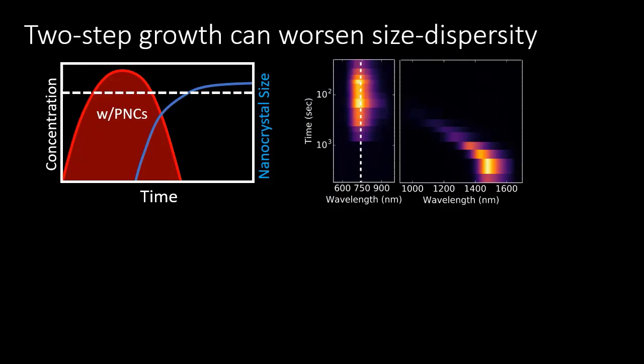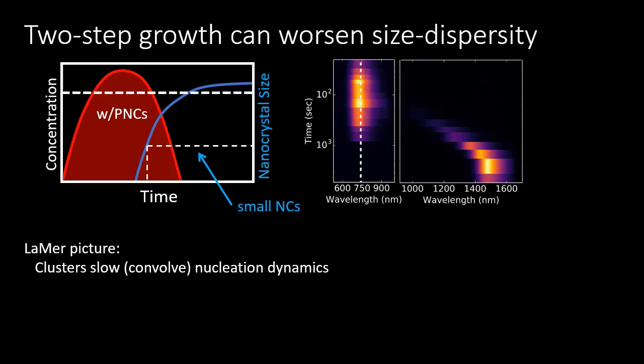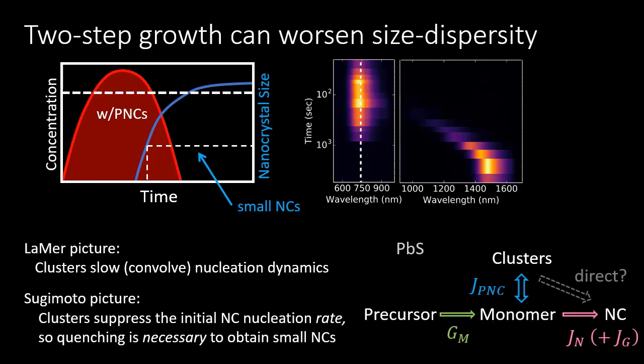Why did this matter for our energy-flattening goal? Two-step growth worsens size dispersity. You can think of it this way: you're adding an extra kinetic step that convolves your nucleation kinetics and makes more of a mess. If you want a small nanocrystal, you have to quench the growth while new nanocrystals are still nucleating, so you can't take advantage of having a sharp starting gun that gets all your growth going simultaneously. Moving toward the richer Sugimoto-type picture: the formation of metastable clusters competes for resources with the formation of nanocrystals, suppressing the initial rate of stable, durable nanocrystals, making it effectively necessary to obtain small sizes. All the precursor material stored in the clusters will end up on the nanocrystals, so if you haven't nucleated as many, they'll end up large.